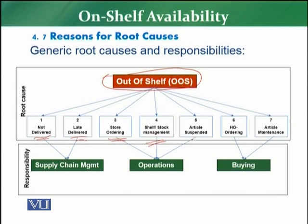The fifth root cause is article suspended. If an article has been suspended or blocked by the buyer for any reason — whether it is the discontinuation of that article or the seasonality of the particular product — that will create an out-of-shelf situation.